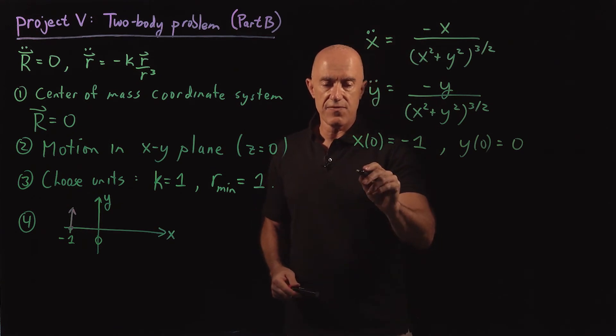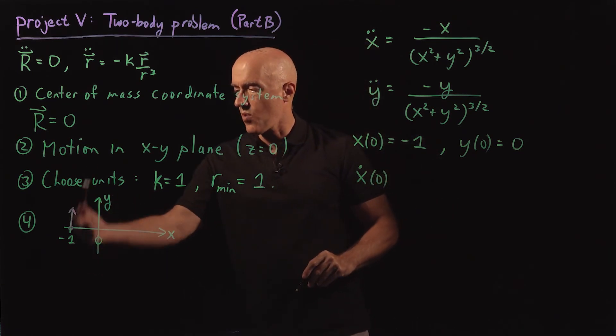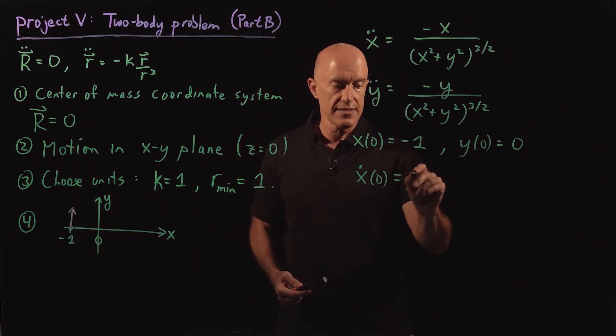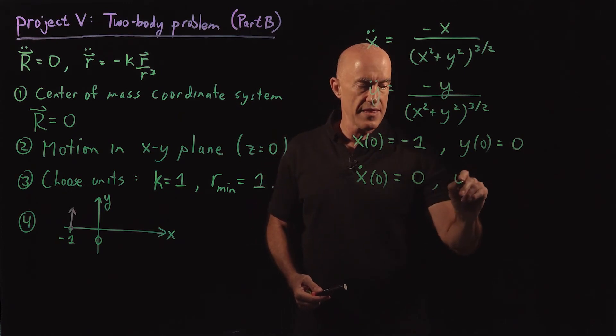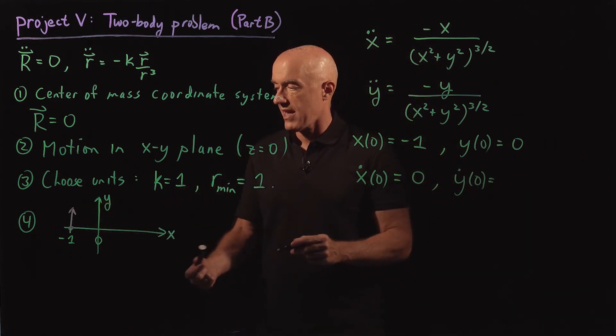Then the initial velocity. So x dot of zero. The initial velocity is going to be in the y direction. So that's equal to zero. And then y dot of zero. So this is the variable that depends on what the orbit looks like.